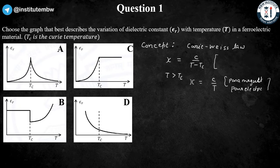When T is less than TC, in case of magnetic material we call it ferromagnetic, and in case of electric material we call it ferroelectric.